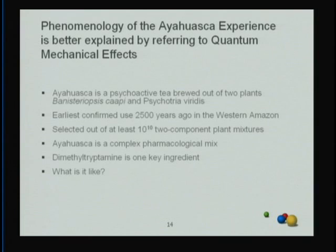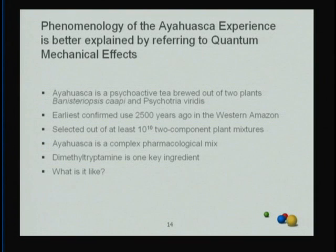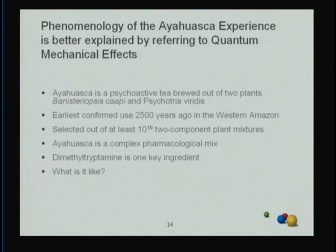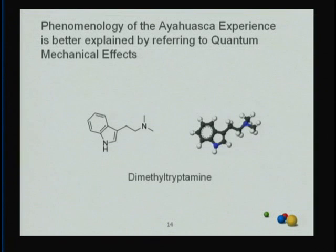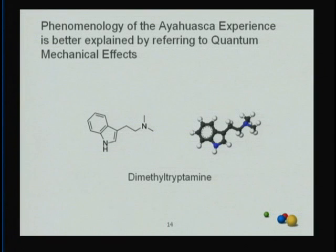There's still an ethnobotanical mystery around how Amazon Indians came up with their plant mixtures. If you assume it's basically a trial and error process, with roughly 100,000 plants available, a two-component mixture would be a selection out of 10 to the 10 combinations — so if you keep this as a key medicament, it hints that it's special. Overall, ayahuasca is a complex pharmacological mix, and a key element is believed to be dimethyltryptamine, or DMT.